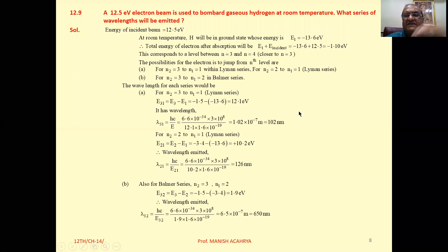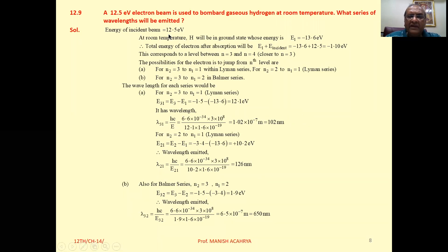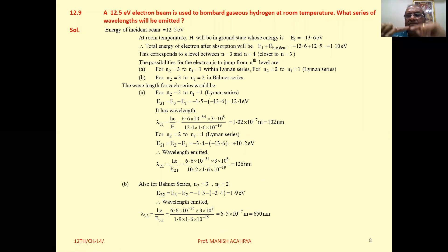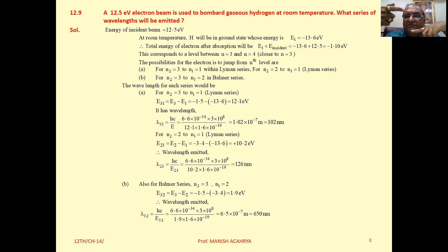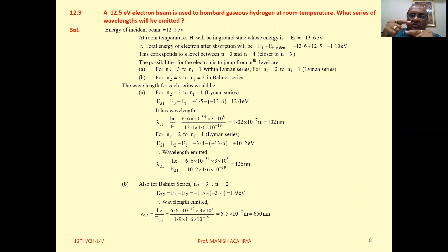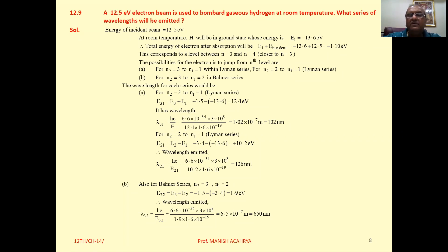When 12.5 electron volt energy is absorbed, that electron will jump to N equal to 3 state. When it jumps to N equal to 3 state, the possible transitions are: from 3 to 2, then 2 to 1, and one transition directly from 3 to 1.